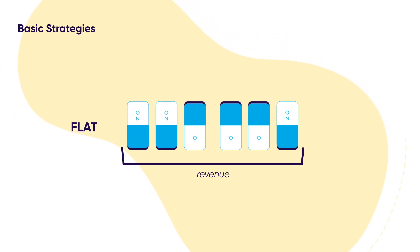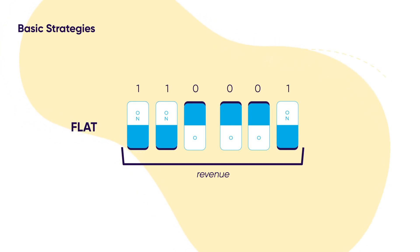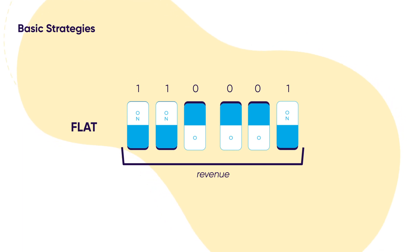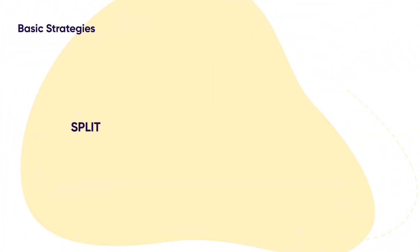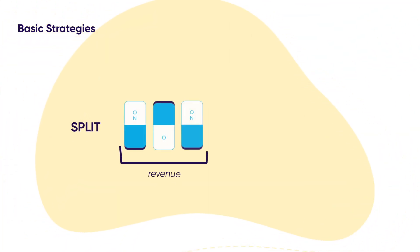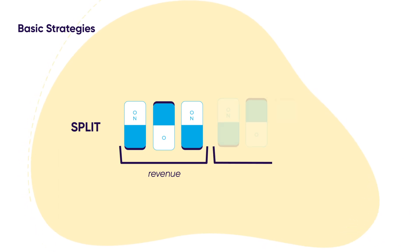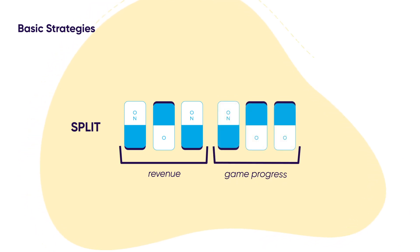If the bits were turned on or off, as illustrated here — 110001 — due to user activity, the conversion value that would be returned by SK Ad Network is 49, meaning $49 in generated revenue. Next up, you can split them two ways: 3 bits for measuring revenue, for example, and 3 bits for measuring game progression.